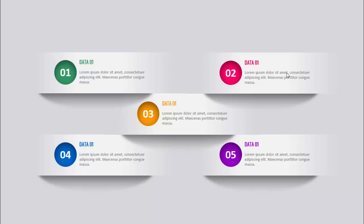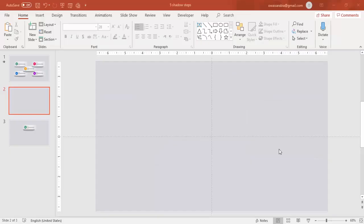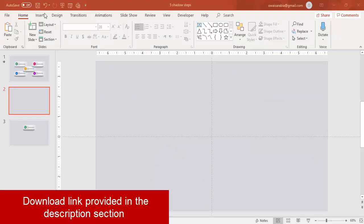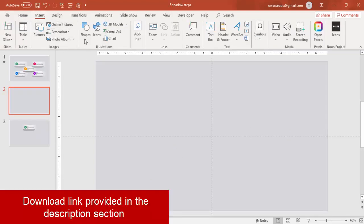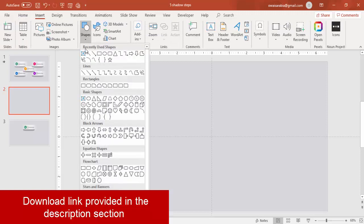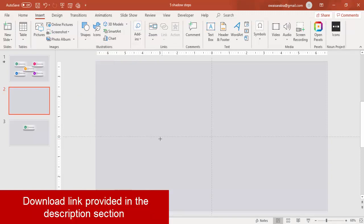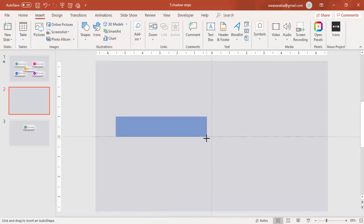To create this slide in PowerPoint, add a new slide and change the slide background color to a gray color. Then go to Insert > Shapes, select a rectangle, and draw the rectangle to about this size.